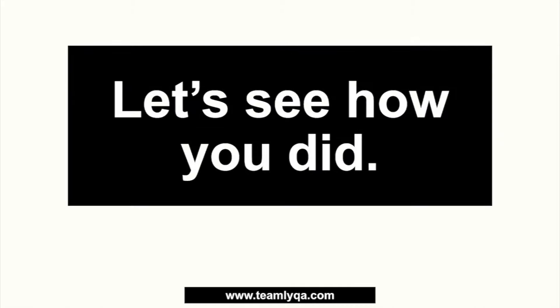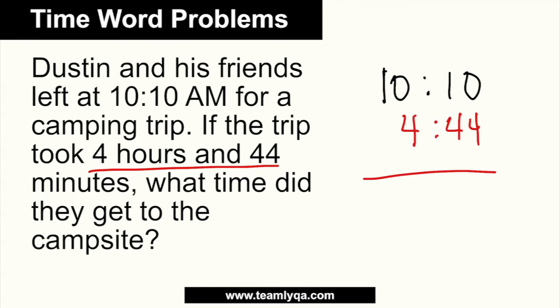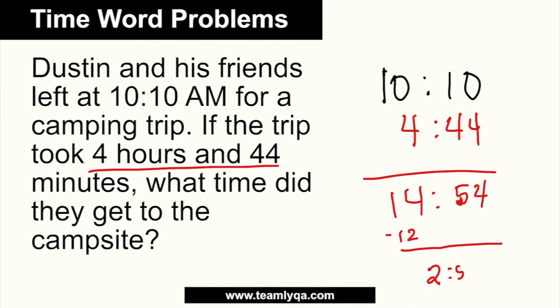Alright, let's see how you did. Dustin and his friends left at 10:10 AM for a camping trip. If the trip took four hours and 44 minutes, what time did they get to the campsite? Starting with 10:10, I add 4 hours and 44 minutes. The minutes: 10 plus 44 equals 54 — doesn't exceed 60, so it stays as-is. That gives 14:54 in military time. Subtracting 12 gives me 2:54. Since one full 12 was formed, that's PM. The answer is 2:54 PM.